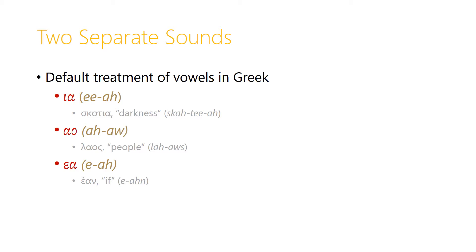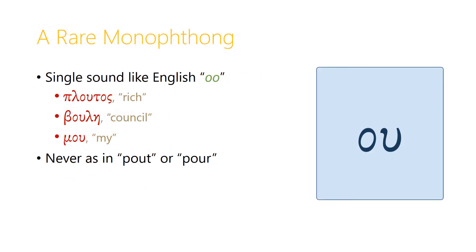And in some cases, like 'ean', we actually have to pause a little bit between the two vowel sounds — 'e-an' — in order to pronounce them separately. There is only one monophthong in Greek, and that is the combination omicron-upsilon. This combines to make a single sound like the English double-o sound, 'oo'.